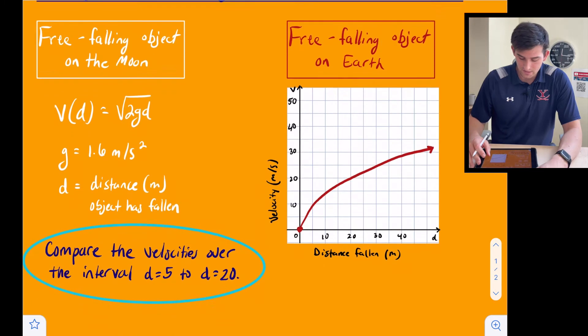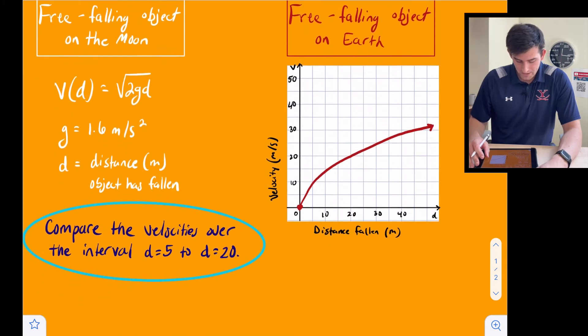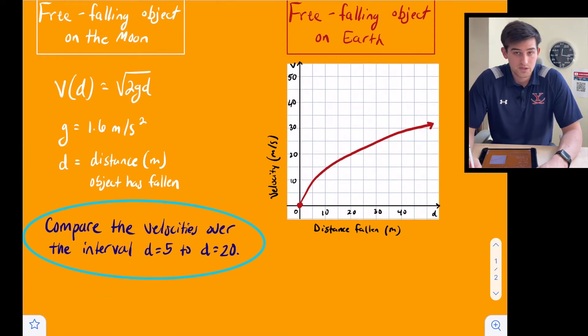Our question is in this blue oval and it says compare the velocities over the interval d equals 5 to d equals 20. For the graph we can see from 0 to 50, but they just want us to compare from 5 to 20.